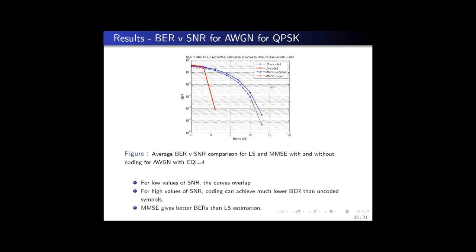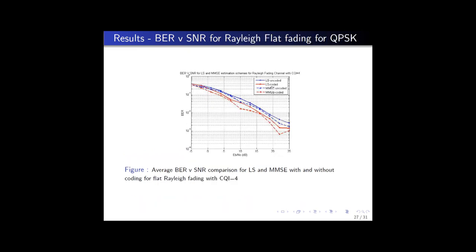The previous simulations were performed for an additive white Gaussian noise channel. The same simulations were then performed for a Rayleigh flat fading channel, for CQI equal to 4 which corresponds to QPSK. We could see that these curves were close to each other, but MMSE gave superior performance compared to least squares.